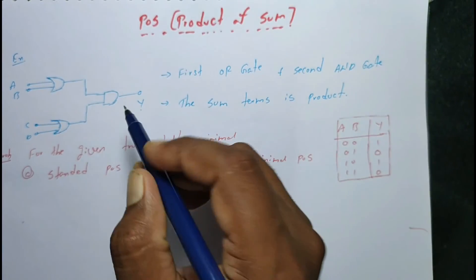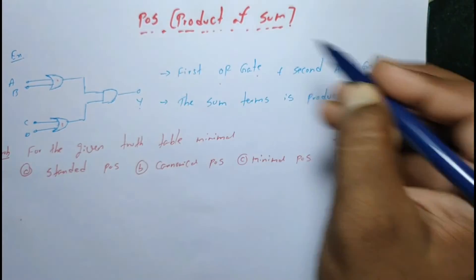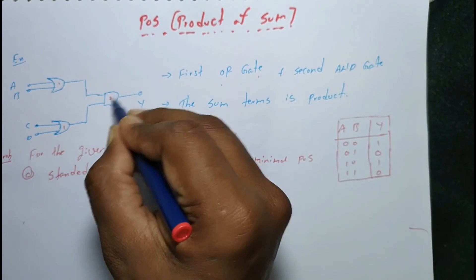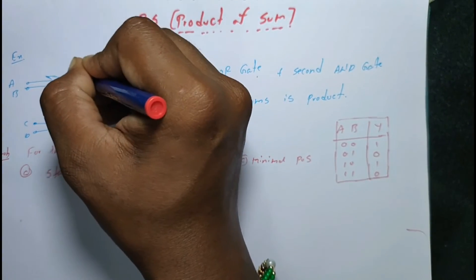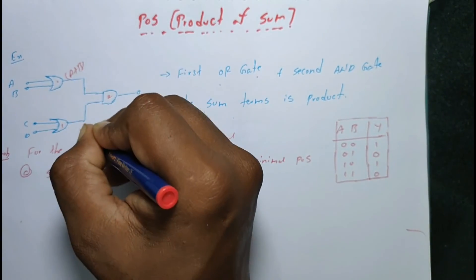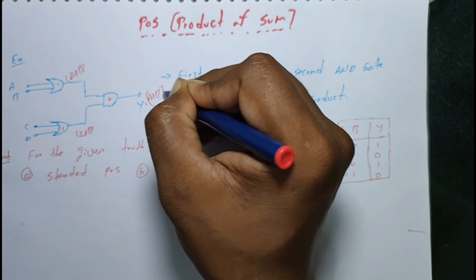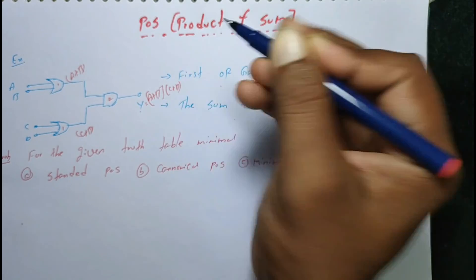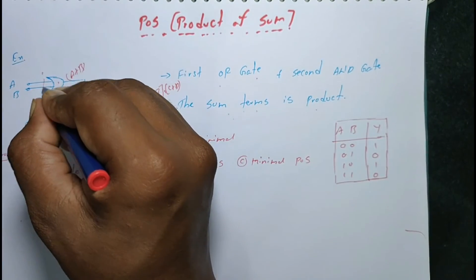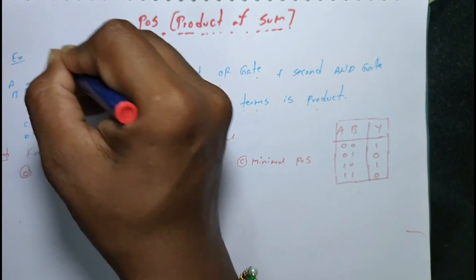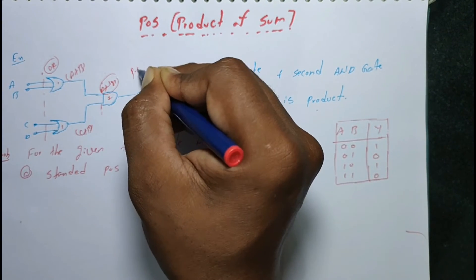In POS form, the first stage is OR gates and the second stage is AND gates. For example, (A + B) and (C + D) are sum terms, giving y equals (A + B)(C + D). The sum terms are multiplied (product), which is called Product of Sum — POS form.